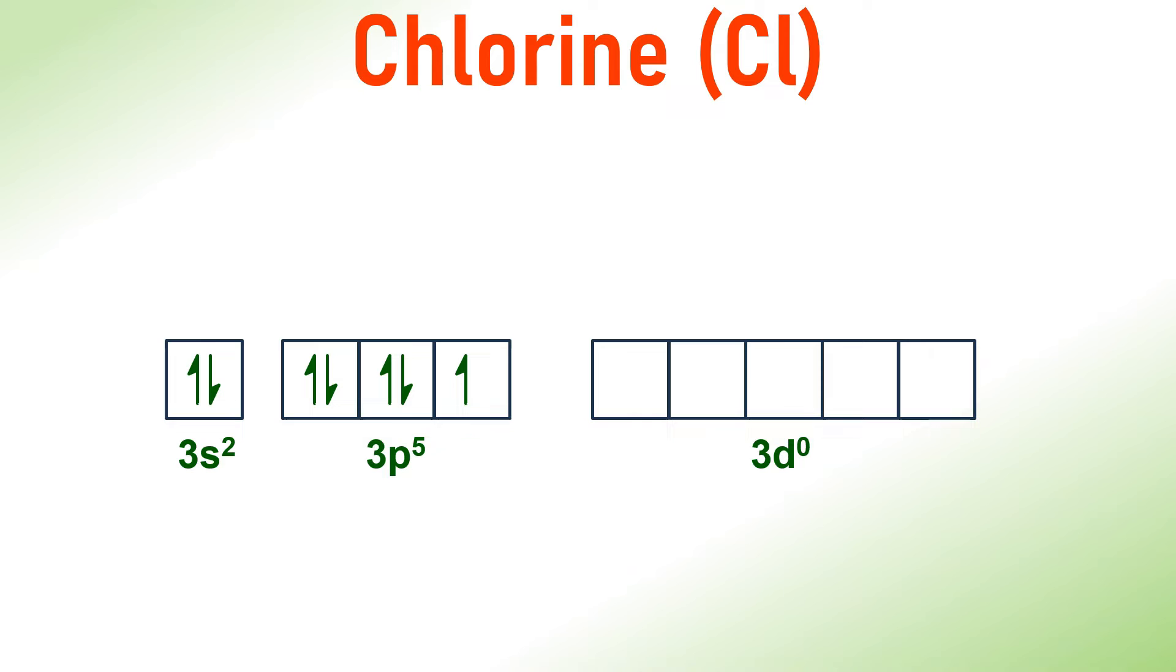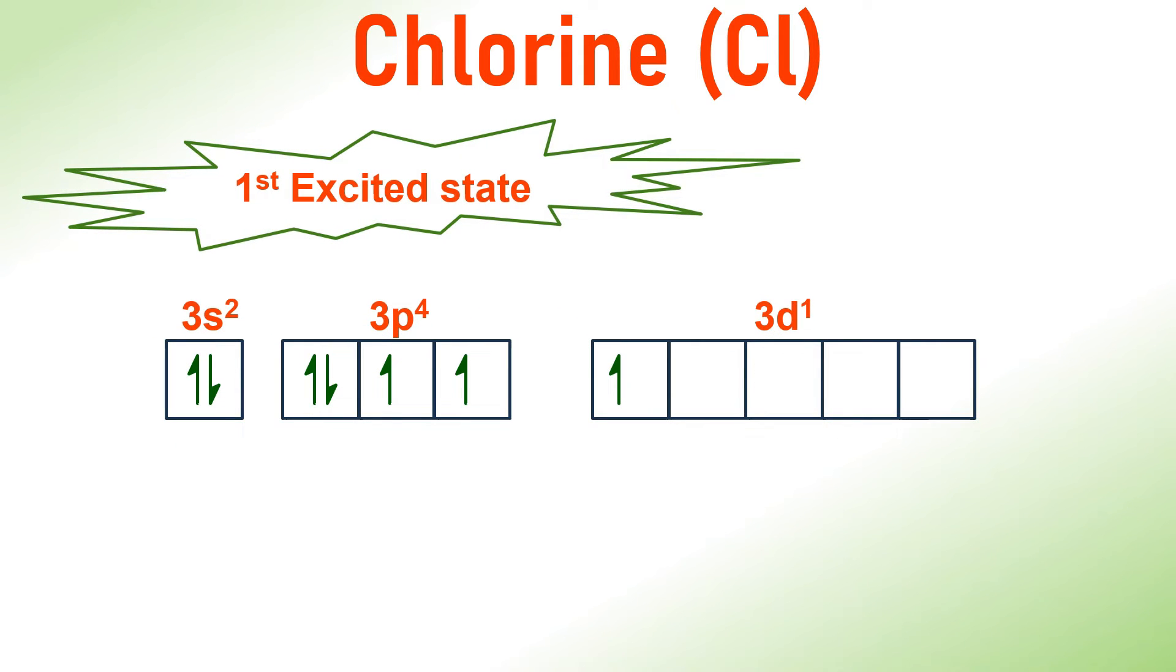Let us now address the how part of the question. One of the electrons in the 3p subshell becomes unpaired and undergoes excitation into one of the 3d orbitals resulting in the outer electronic configuration of 3s2, 3p4, 3d1.